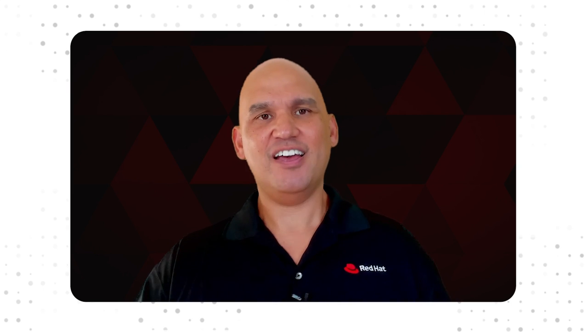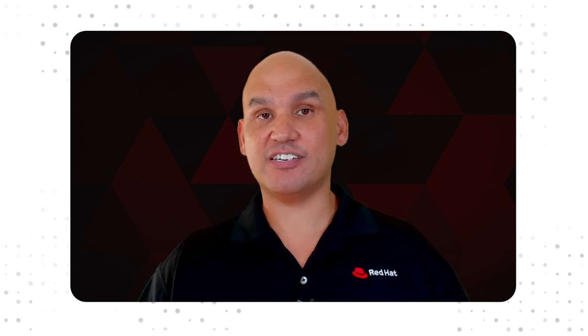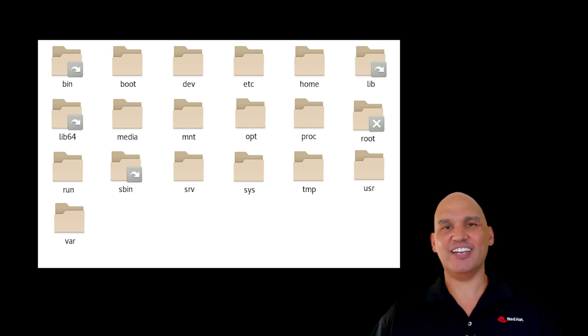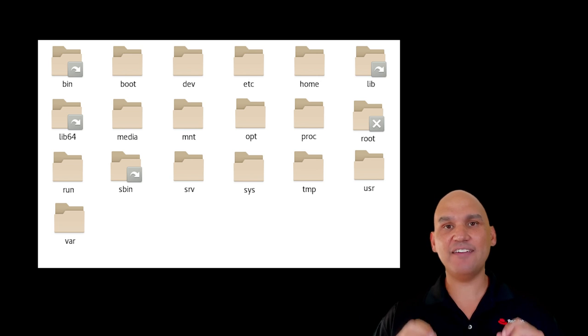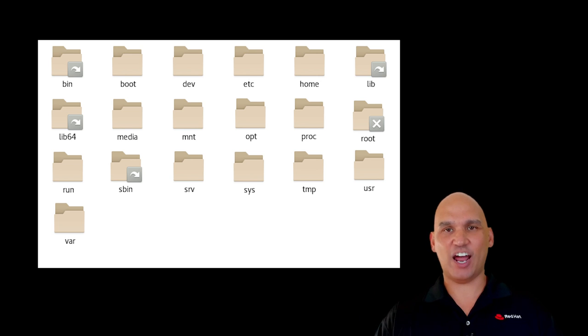Other differences might be less noticeable at first, like the file and directory layout, or where additional software packages place their executable programs, libraries, drivers, and other operating system and runtime components. Red Hat Enterprise Linux uses the File System Hierarchy Standard, commonly known as the FHS, and it defines the names, locations, and permissions for many file types and directories.